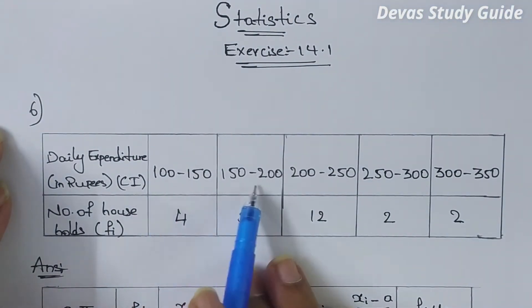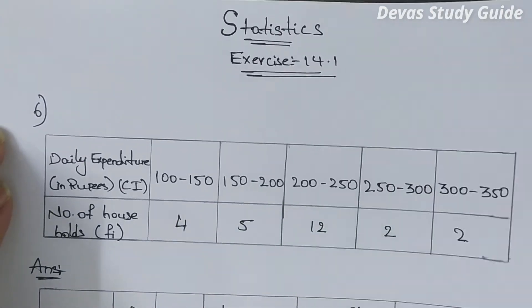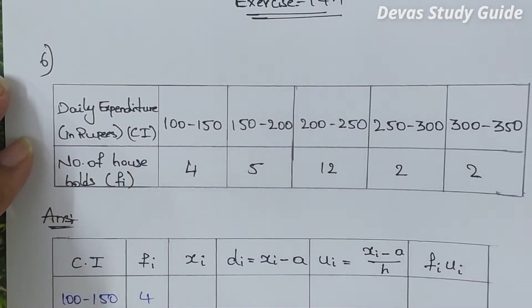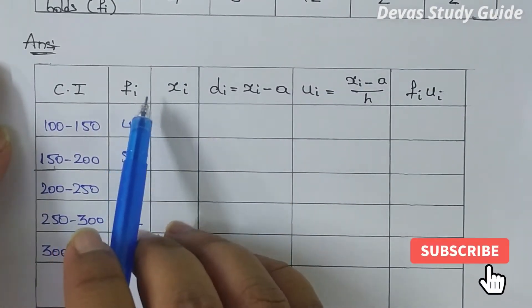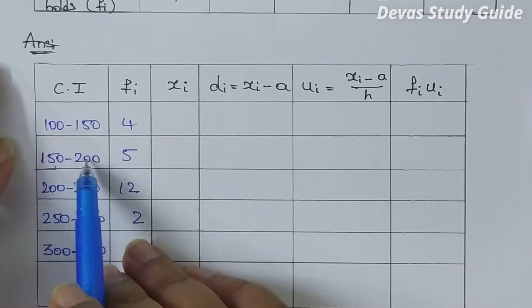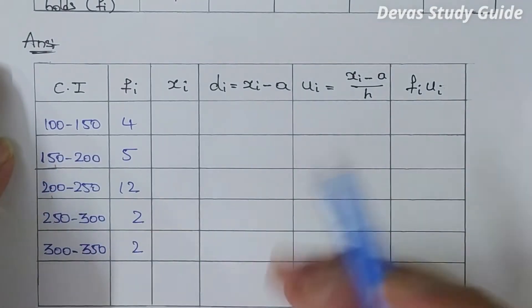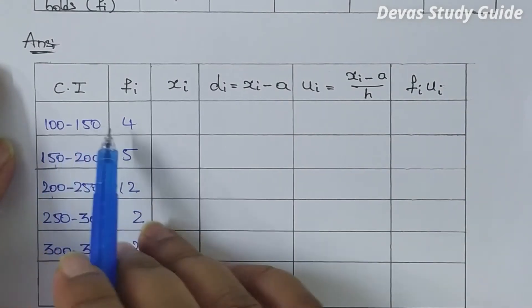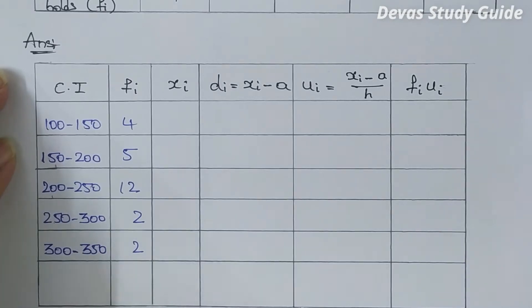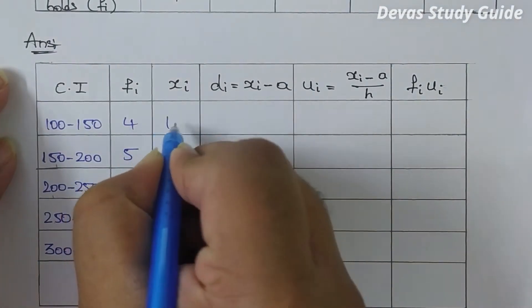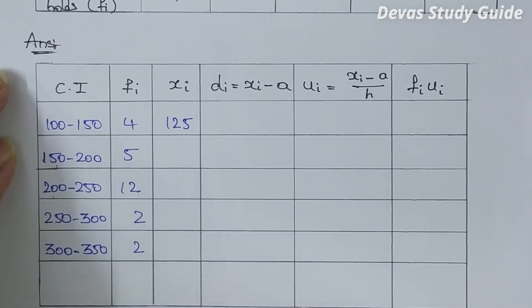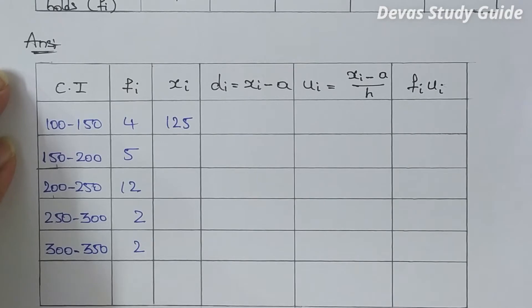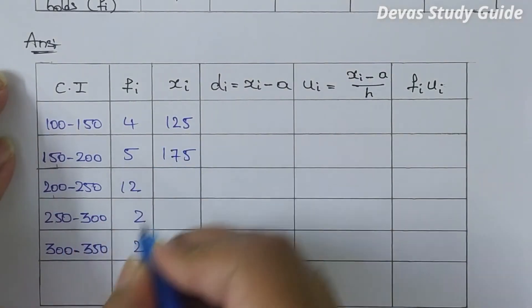The class intervals are 100 to 150, 150 to 200, and so on with the same class width. Calculating midpoints: 100 plus 150 equals 250, divided by 2 equals 125. Next, 150 plus 200 equals 350, divided by 2 equals 175.